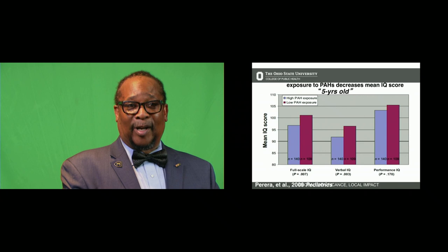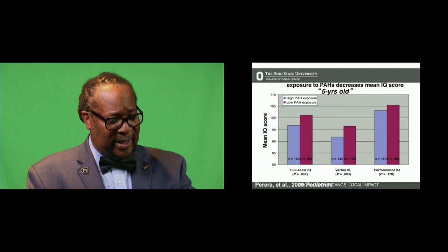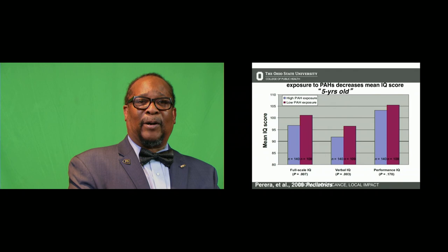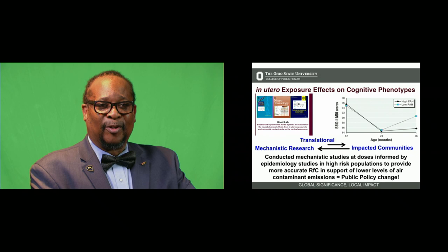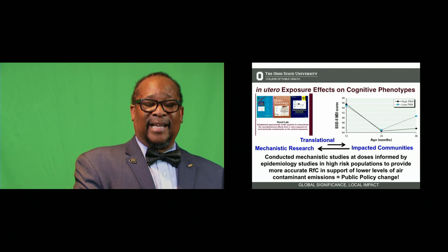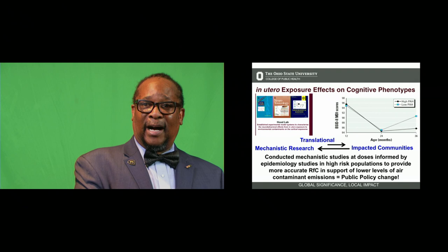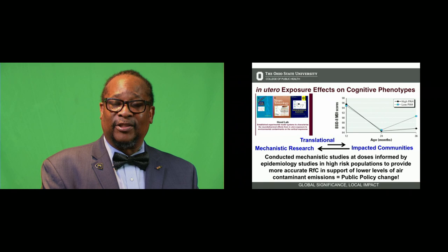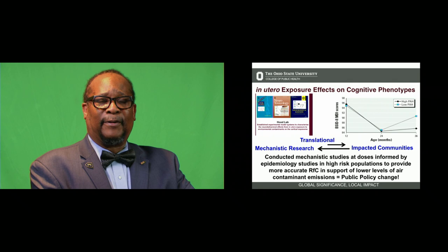The high PAH exposure group remains very low as opposed to the low PAH exposure group. The blue square is the low PAH exposure group, and the black diamond is the high PAH exposure group. The Bayley Scales of Infant Development Mental Development Index scores represent about a difference of about nine IQ points — suggesting that in utero exposure to high concentrations of PAH versus low can result in a nine-point differential in the Mental Development Index. They're still following these kids in this longitudinal cohort study.